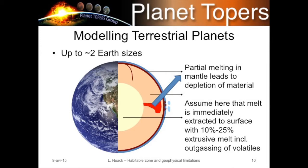Concentrating only on terrestrial planets, when modeling them we limit ourselves to a differentiated body: an iron core — which can be partially liquid or entirely solid — a silicate mantle, and some kind of crust, either basaltic oceanic crust or continental crust. It's very important to model the mantle, because when hot mantle material from the core-mantle boundary rises upwards, at some point pressure-release melting occurs, where some minerals in the mantle mixture start to melt and are extracted outwards towards the surface.